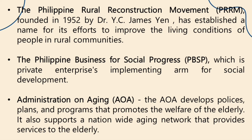Next is The Philippine Business for Social Progress, or PBSP, which is the private enterprise implementing arm for social development. It is the largest business-led NGO and operates at a nexus of corporate citizenship, sustainable development, and poverty reduction. The purpose of PBSP is to unite efforts to end poverty. The vision is to lead the business sector's efforts to reduce poverty in the Philippines, and the mission is committed to poverty reduction by promoting business sector leadership and commitment to programs that lead to self-reliance.